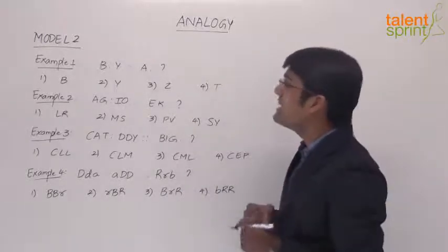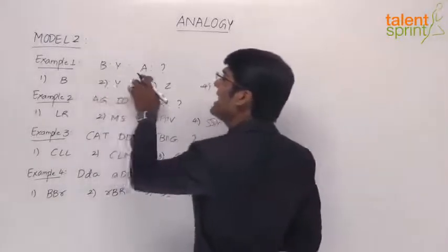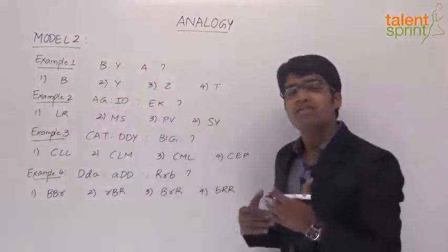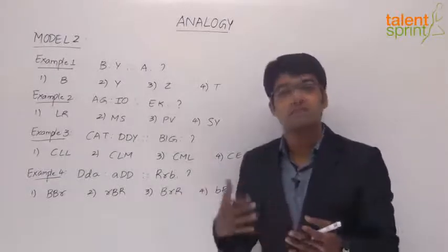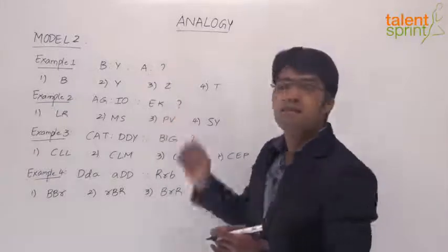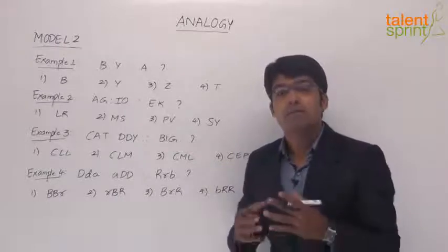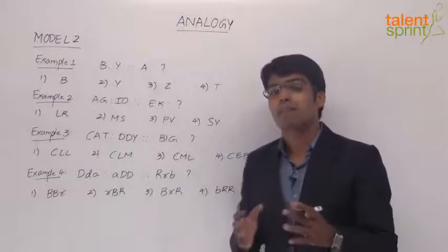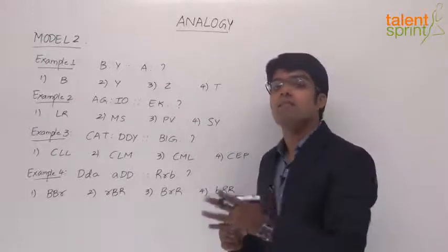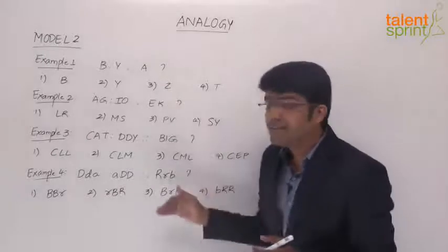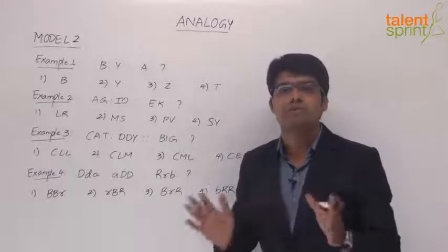The first example here is: B is to Y in the same way A is to what? So B is related to Y, then A is related to what? The questions here are based on the positions of the alphabet. Most of the times the logic is based on positions, so let us try to understand what positions have been picked up. Make sure that you remember all these positions perfectly, so that while answering these questions you don't spend too much time finding out the actual position — you must remember all the positions by heart.